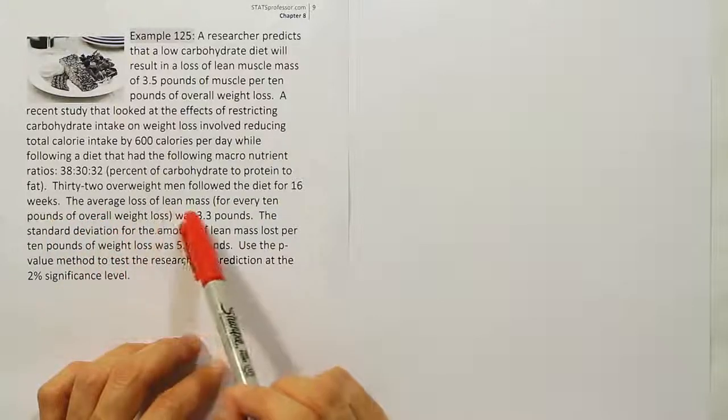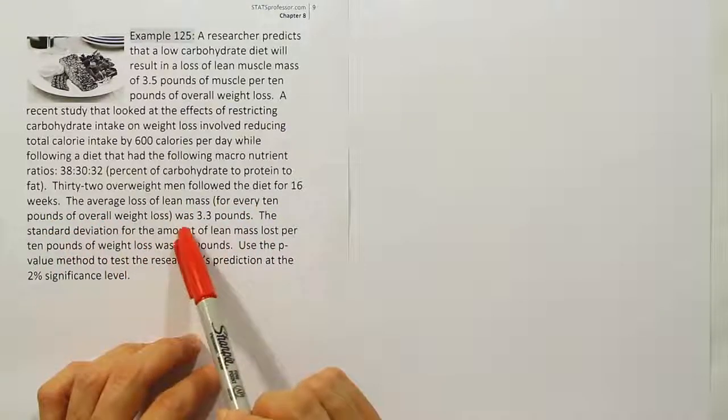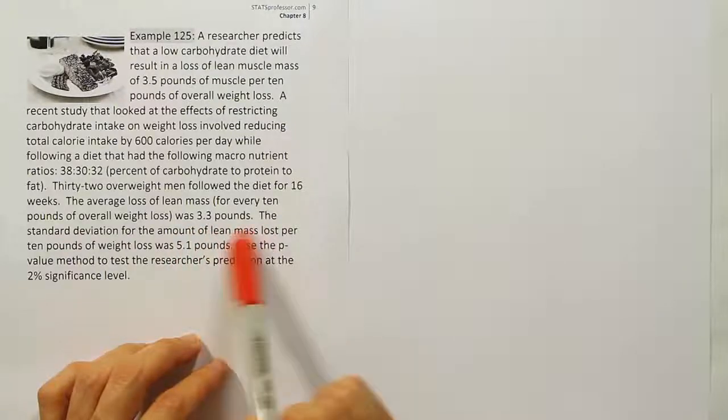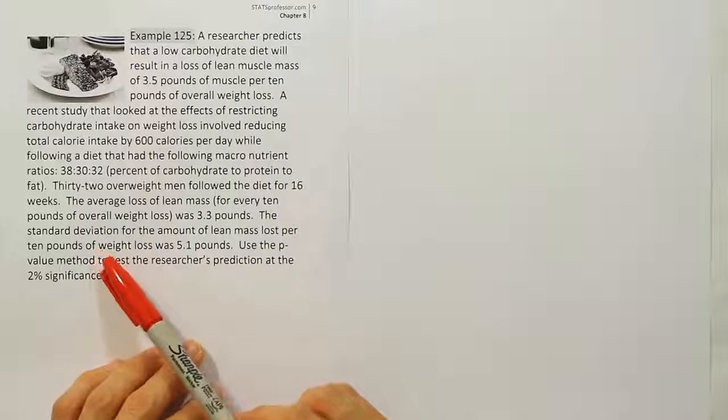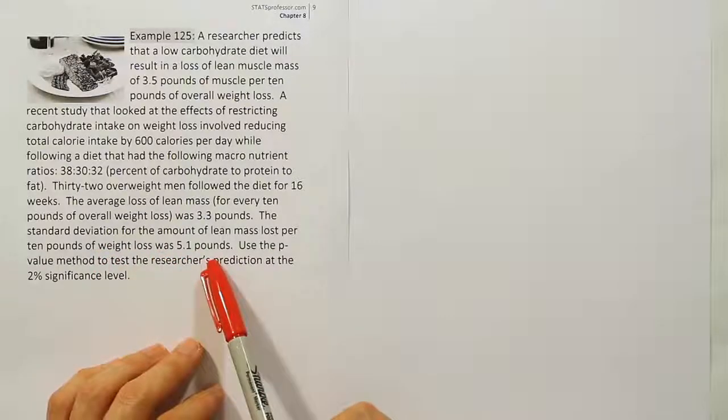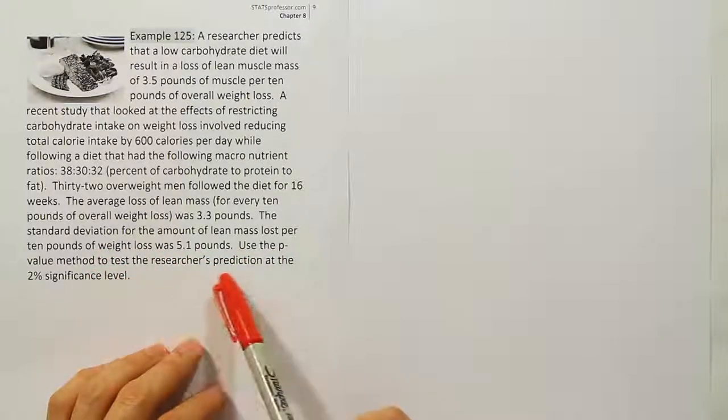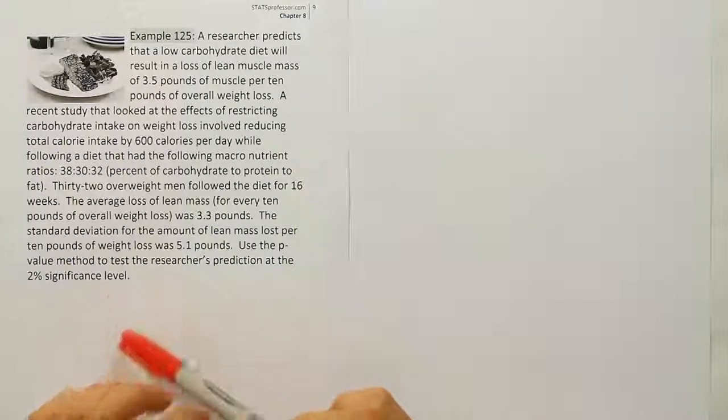The average loss of lean mass for every 10 pounds of overall weight loss was 3.3 pounds. The standard deviation was 5.1 pounds. Use the p-value method to test the researcher's prediction at the 2% significance level.